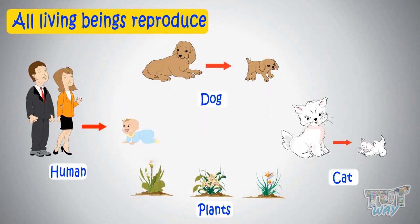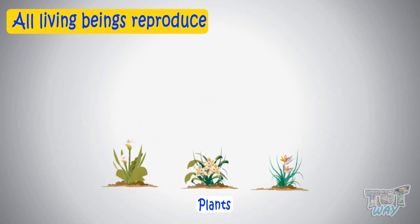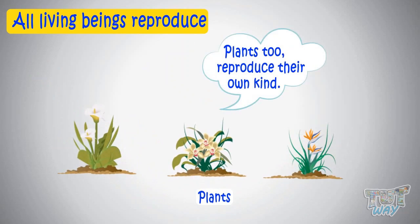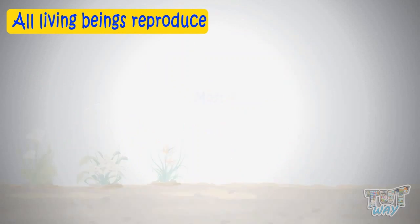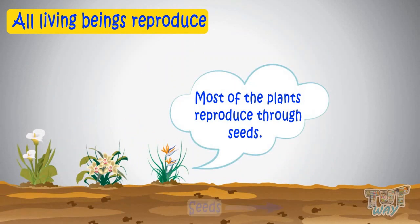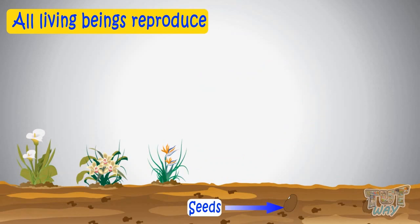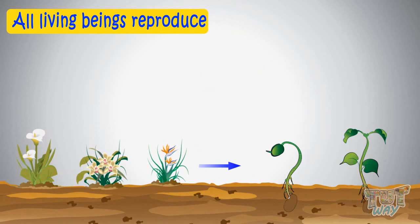We learned that all living beings reproduce — that is, all living things give birth to the same kind. And similarly, plants too reproduce their own kind. Most of the plants reproduce through seeds. They produce seeds which, when they germinate, produce a new plant.